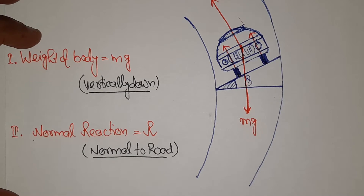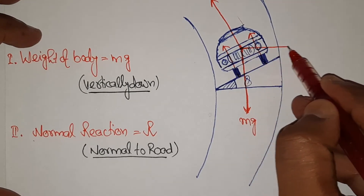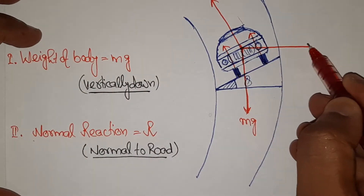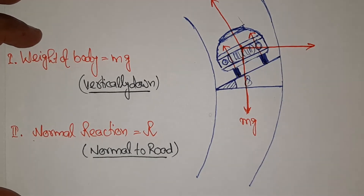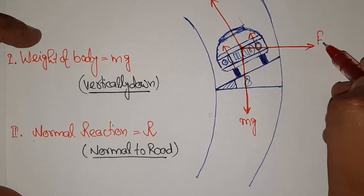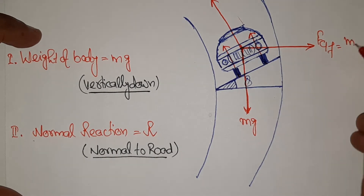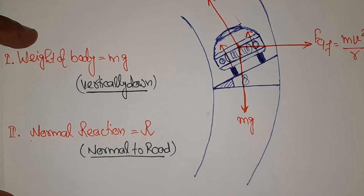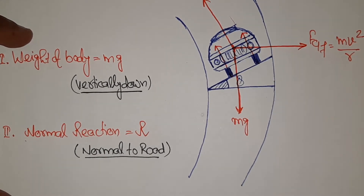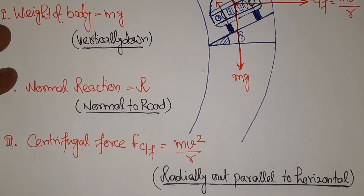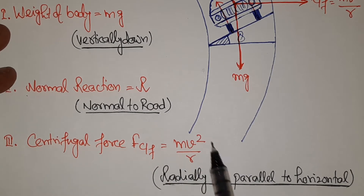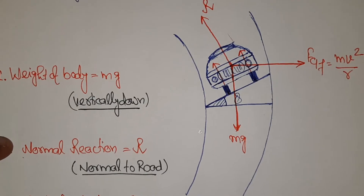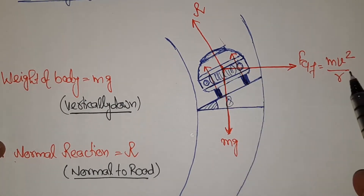As this body moves along the curve, centrifugal force will act on the center of mass radially outward, parallel to horizontal. Centrifugal force directly depends on velocity: mv²/R, where R is the radius of the turn.